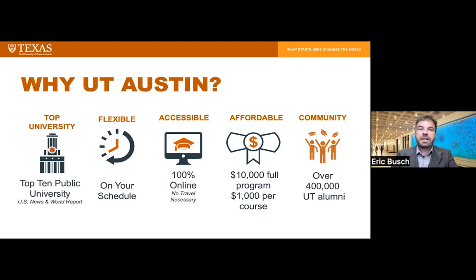Our degree program is extremely flexible. The MSDS program offers one of the most flexible paths to a master's degree you can find — you can take as few as one course per semester or as many as five, depending on your schedule. Our program is 100% online, so MSDS requires no travel of any kind. At $10,000 for a full master's degree, the program is within reach for most students. And when you join MSDS, you become a UT Longhorn, interacting and collaborating with classmates, TAs, and faculty from around the world, and joining LinkedIn and other networking tools specific to MSDS.